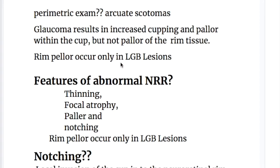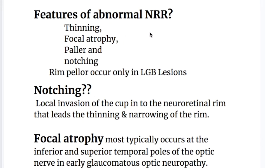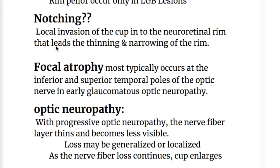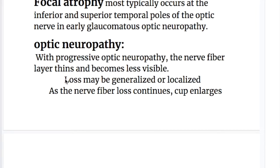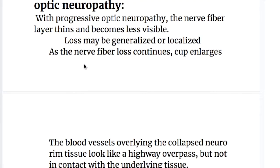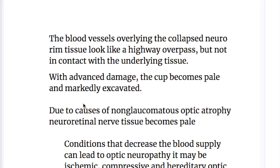Rim pallor occurs only in lateral geniculate body lesions. Features of an abnormal neuroretinal rim include thinning, focal atrophy, pallor, and notching — where local invasion of the cup into the neuroretinal rim leads to thinning and narrowing. Focal atrophy most typically occurs at the inferior and superior temporal poles of the optic nerve in early glaucomatous optic neuropathy. With progressive optic neuropathy, the nerve fiber layer thins and becomes less visible. As nerve fiber loss continues, the cup enlarges, and blood vessels overlying the collapsed neuroretinal tissue look like a highway overpass, not in contact with the underlying tissues.